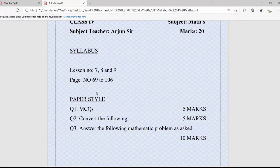The first question will be about MCQs that will be of five marks. Then convert the following, the convert the following question I will indicate in the next lecture when we will see each chapter in detail for the revision. And the last question will be answer the following mathematic problem as asked, which will be of 10 marks. Five questions will be asked, each will be of two marks, so total 10 marks for question number three.